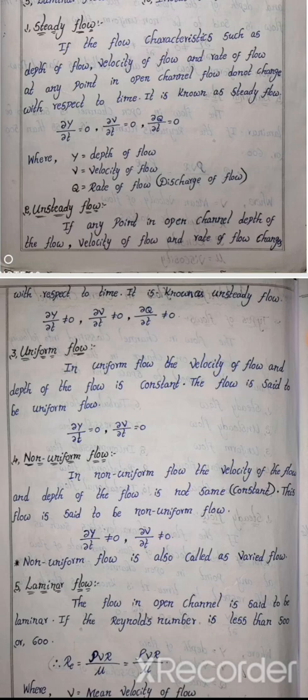The mathematical expressions for unsteady flow are: ∂v/∂t ≠ 0, ∂y/∂t ≠ 0, and ∂q/∂t ≠ 0. For steady flow, these partial derivatives are equal to zero. This is the key difference between steady and unsteady flow.